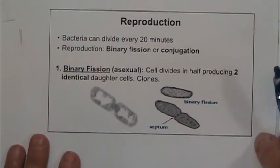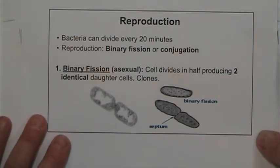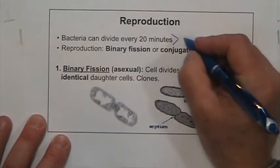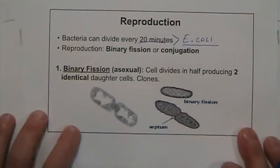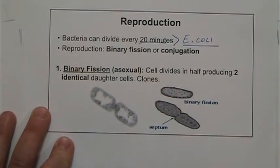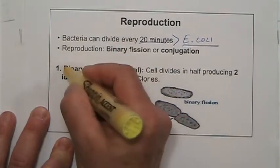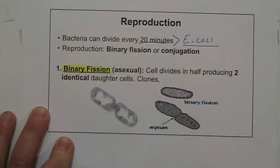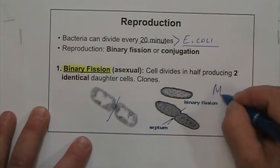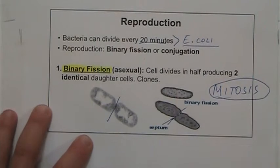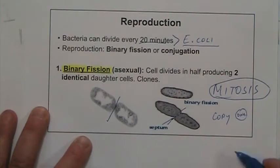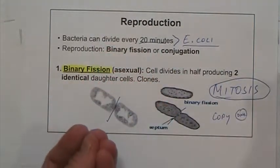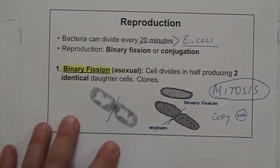How do bacteria reproduce? They reproduce both sexually and asexually. Some bacteria like E. coli can divide every 20 minutes. The type of asexual reproduction they have is called binary fission — the cell divides into two. They copy their circular DNA, separate it, and both cells end up with the same DNA.